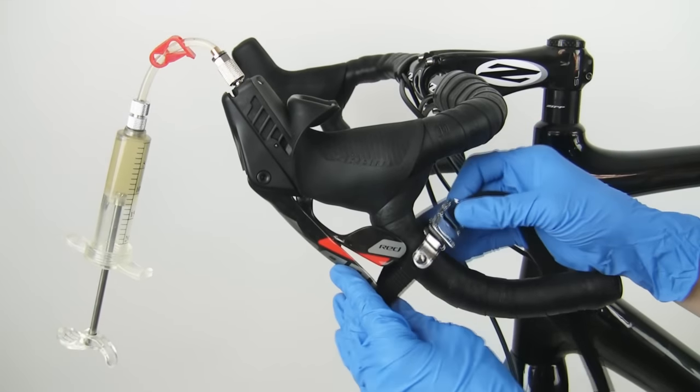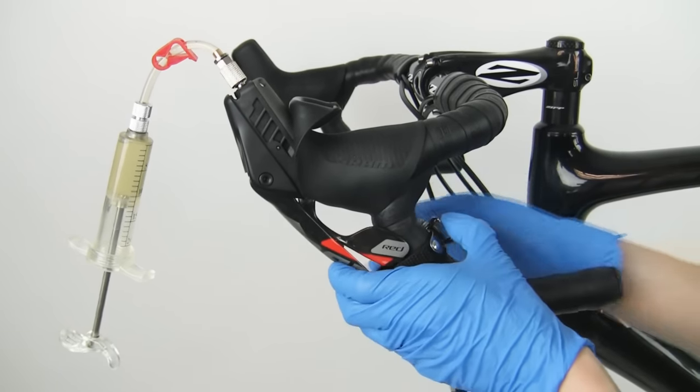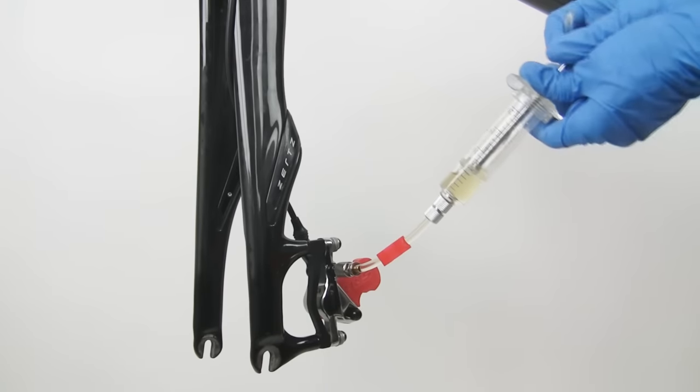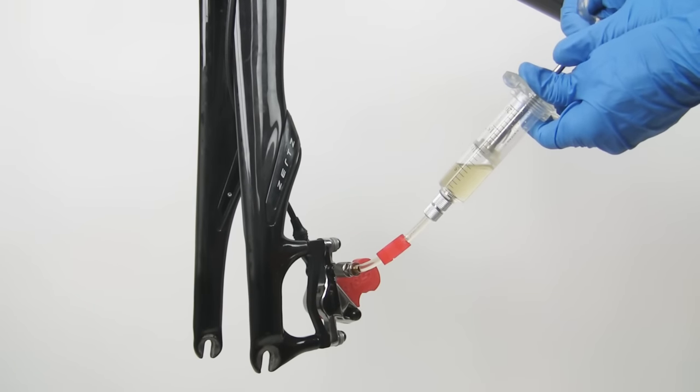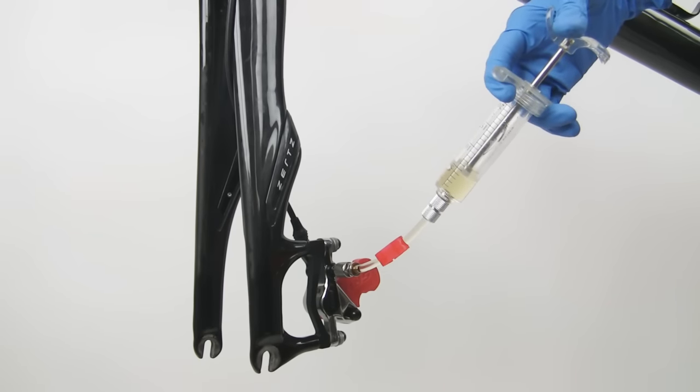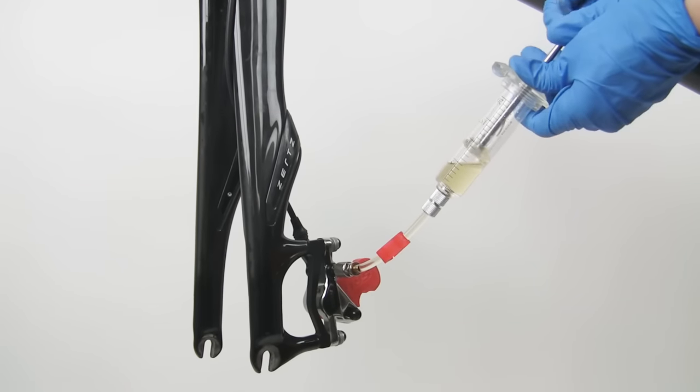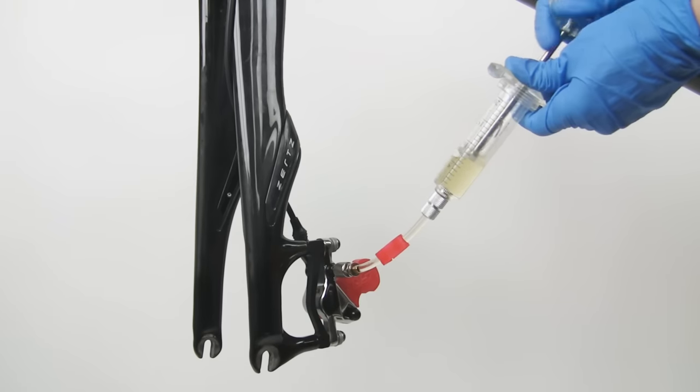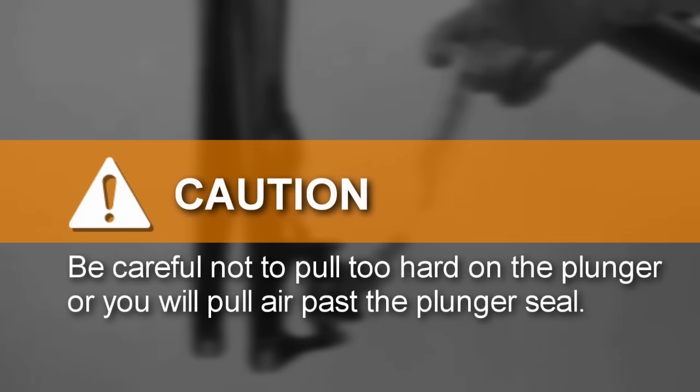Pull the brake lever to the handlebar and fasten it with a toe strap or rubber bands. Pull out on the caliper syringe plunger, then gently push in on the plunger to pressurize the system. Repeat this procedure several times until large bubbles stop coming out of the caliper. Be careful not to pull too hard on the plunger or you will pull air past the plunger seal.